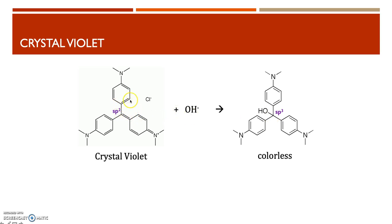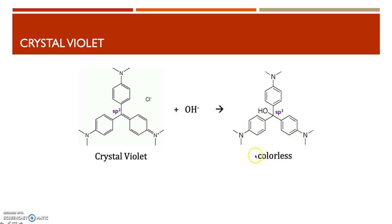Every carbon in crystal violet is an sp2 hybrid carbon, forming a big network where pi bonds allow electrons to move around freely. Crystal violet is a nice purple color, but when we react it with hydroxide and break that conjugation in the center, we now have three separate rings that are not connected to each other, and that molecule becomes colorless.